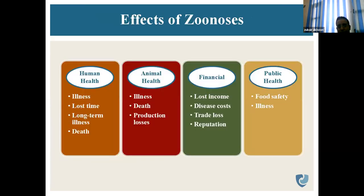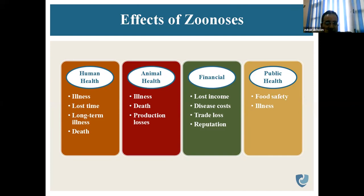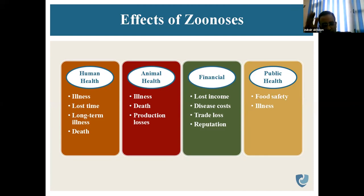What are the various broad effects of zoonosis? They affect human health — causing illness, loss of time, long-term illness, and in extreme cases, death. In animals, they cause illness, death, and production loss.